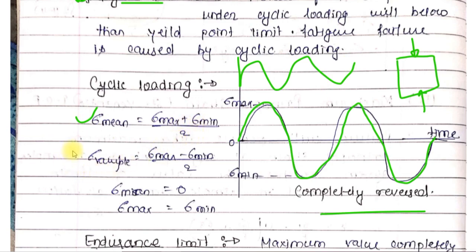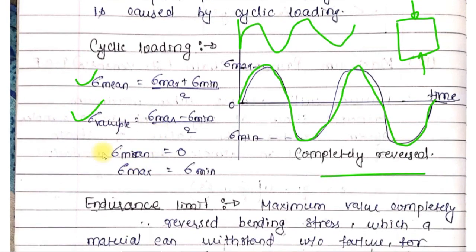We use the formula sigma variable which is sigma maximum minus sigma minimum divided by 2. Here for completely reversed cyclic loading, sigma mean equals zero. Sigma maximum equals minus sigma minimum, so these two are equal to each other.